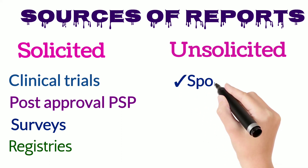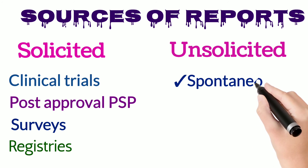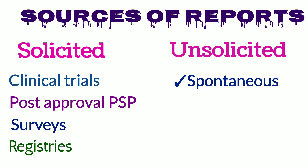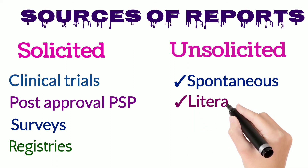First is spontaneous or voluntary reporting. As discussed earlier, spontaneous reports are drug reports where no active measures are taken other than the encouragement of healthcare professionals. Second is literature source — pharmaceutical companies do regular screening of public literature to check whether any adverse event related to their products has been posted.